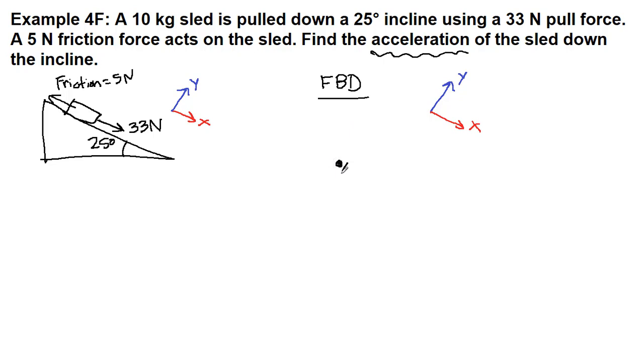First of all, we can start with our little tilted sled. We can start with gravity. Gravity doesn't care that we're on an incline. While we're on the surface of Earth, gravity is always going to point straight down, and it's going to be mass times the acceleration of gravity, g. In this particular case, it's 10 times 9.8, or 98 newtons.